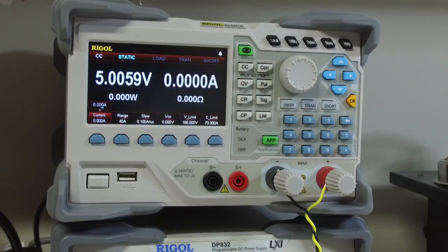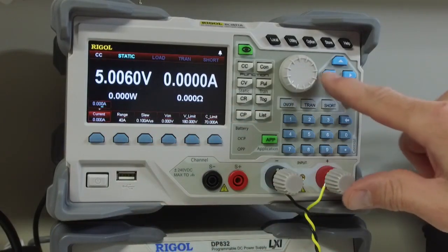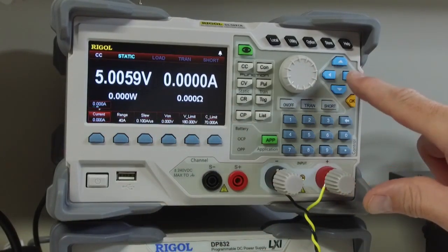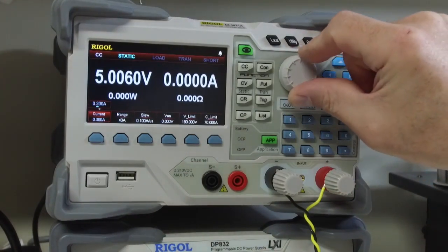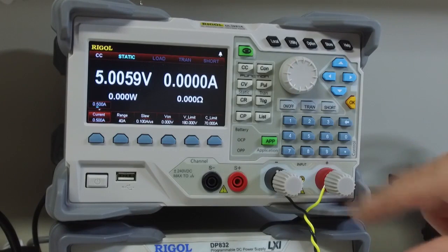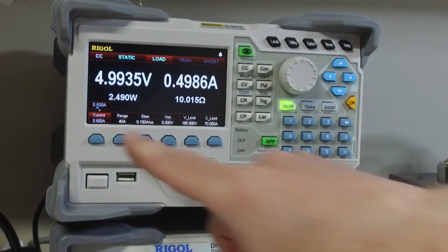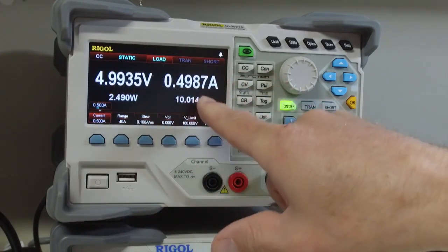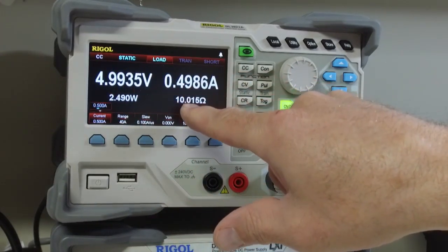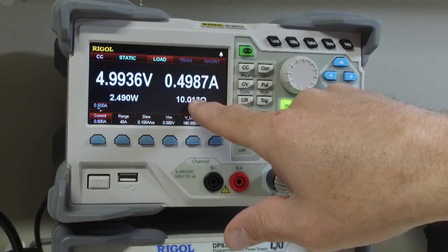So if I'm in constant current, I can set the current value right here either by moving the cursor around and scrolling. There's half an amp or I can direct enter. So I just entered in half an amp and it displays how many watts and the simulated resistance.